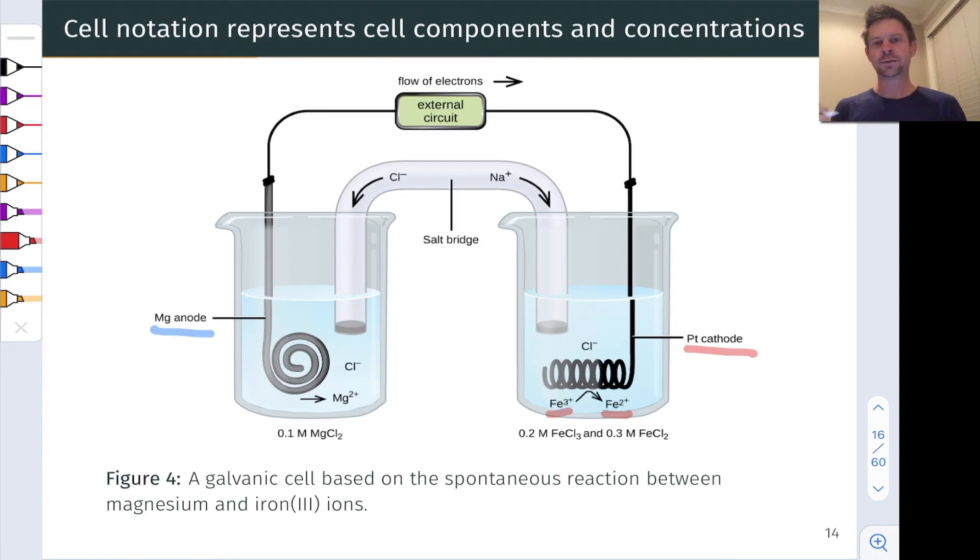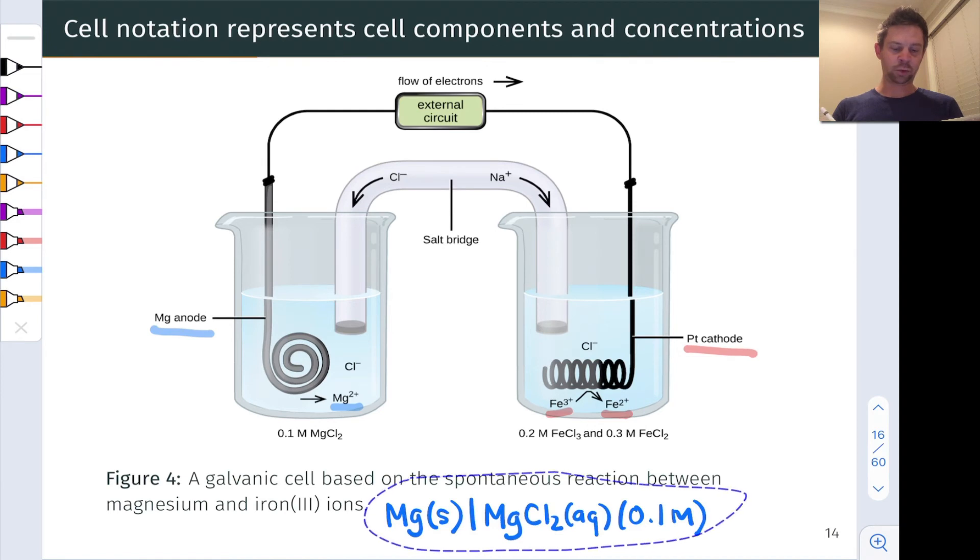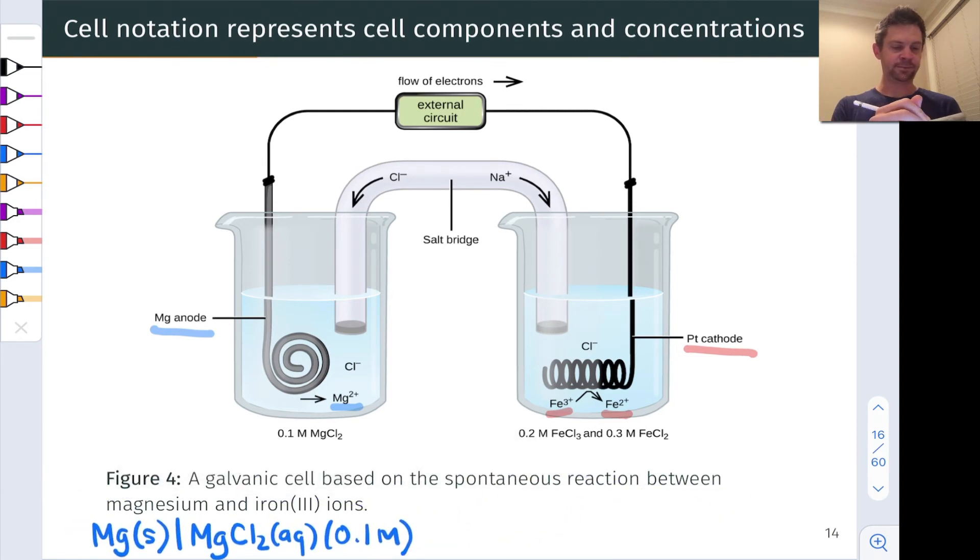Even without a ton of knowledge about the underlying redox reactions, we can write the cell notation based on what we see in the figure. At the magnesium anode, Mg metal is undergoing oxidation to Mg2+. This is the anode side, so we're going to write it first. We've got magnesium metal, the ultimate source of the electron, magnesium solid. Upon oxidation, that becomes MgCl2 aqueous, and the concentration is 0.1 molar.